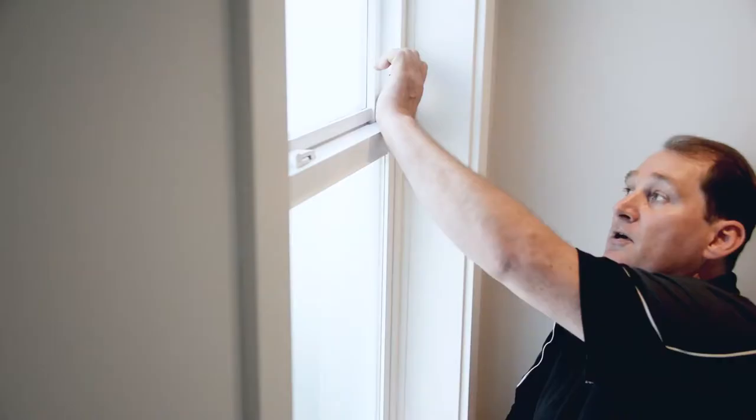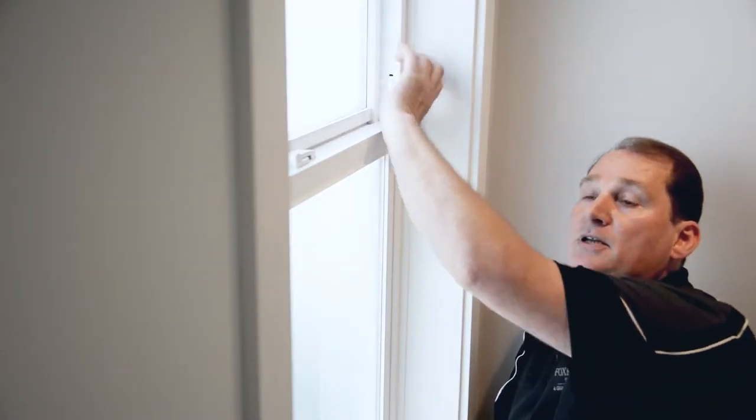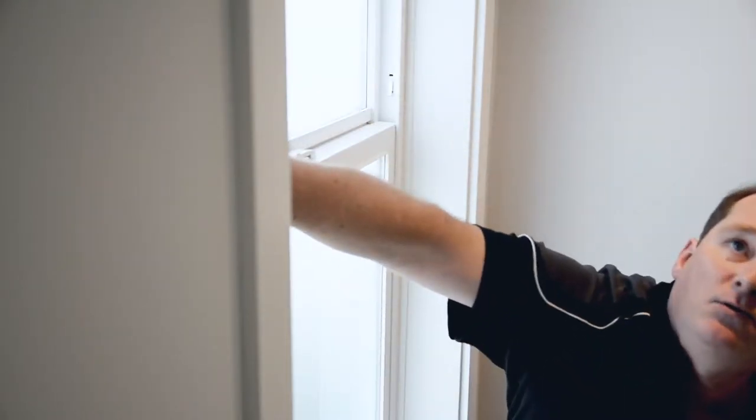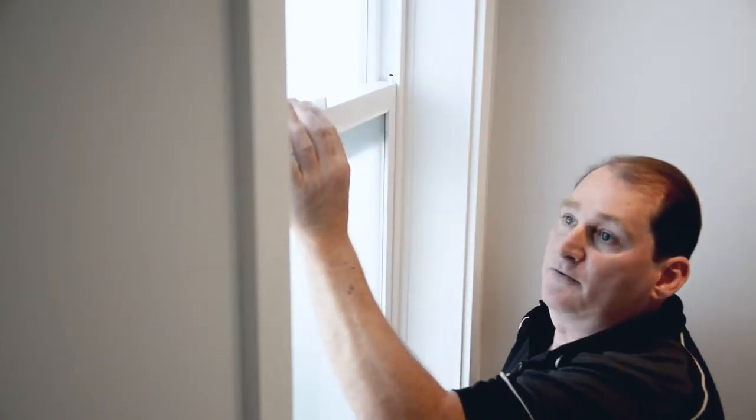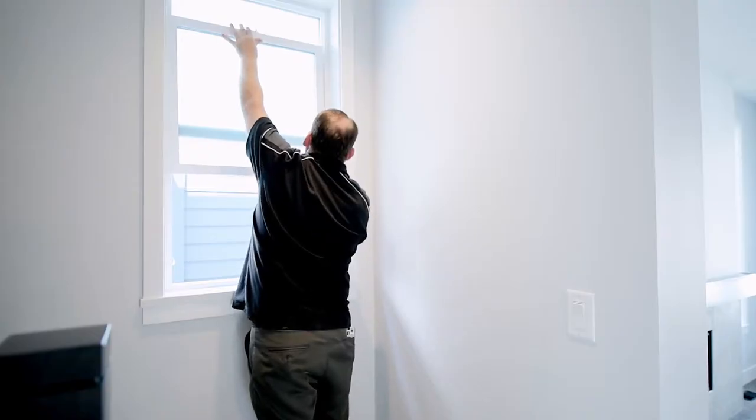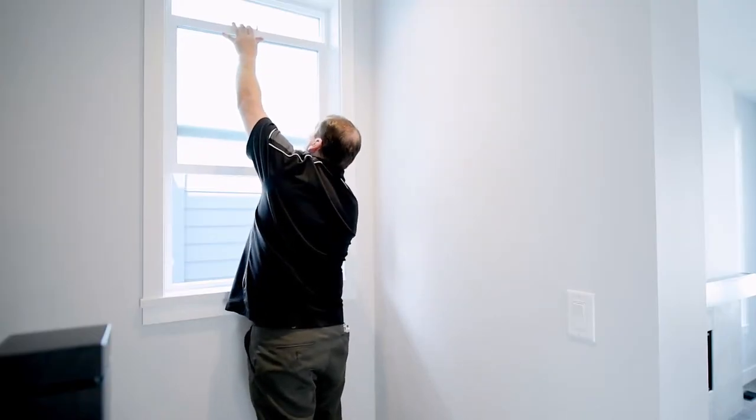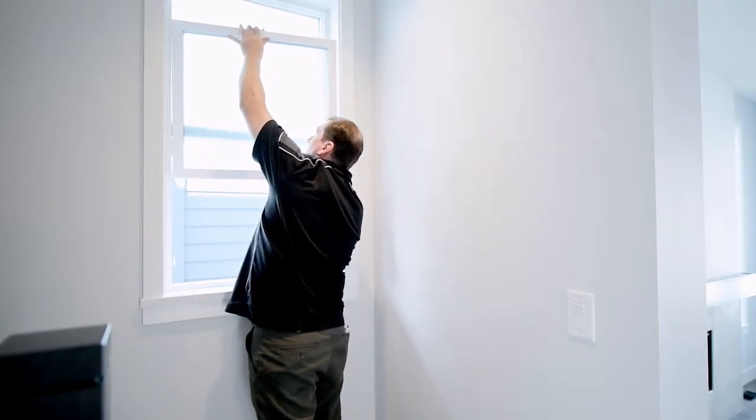First, you're going to pop the two little clips on the inside of the window frame out, sliding the window carefully straight up to about the three-quarter mark. And then you can easily pop the window out.